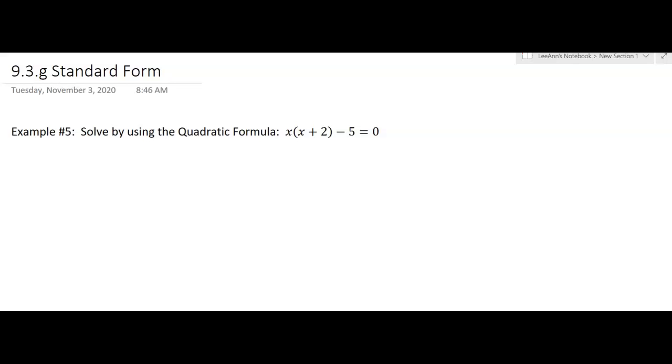So in this problem it's not in standard form so we're going to have to distribute here. So we'll have x squared plus 2x minus 5 equals 0. Now it's in standard form. Okay, so a is going to be the 1 there, this will be b, this will be c.